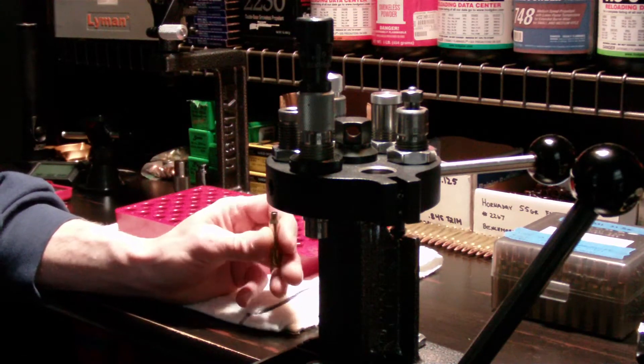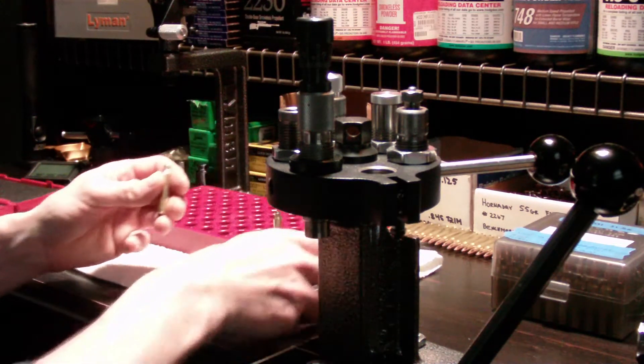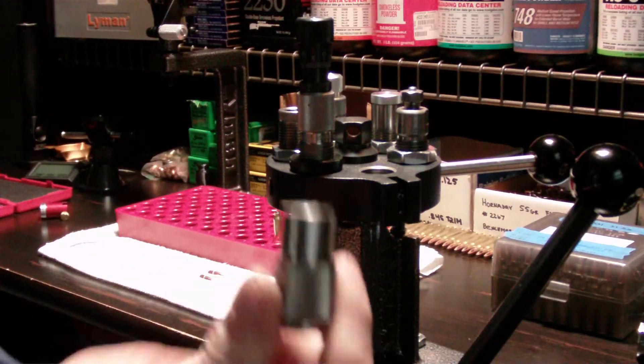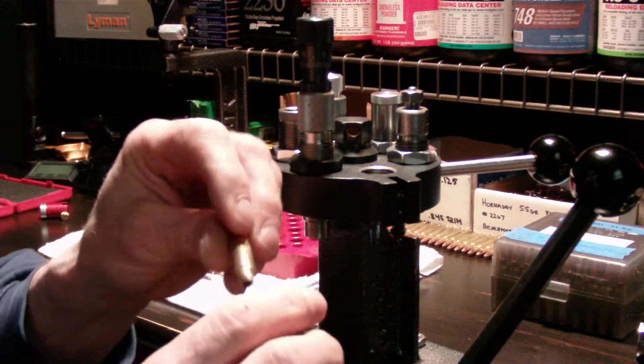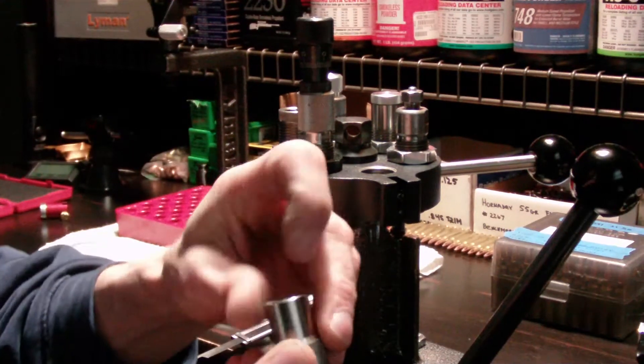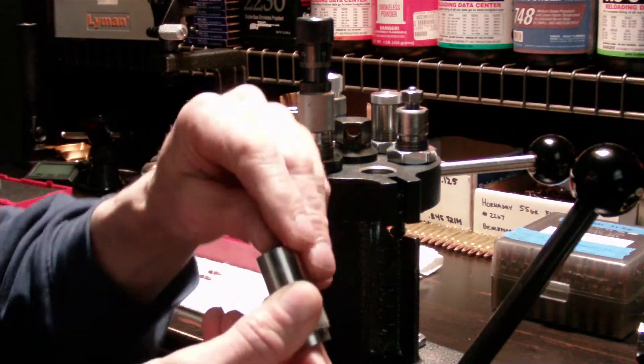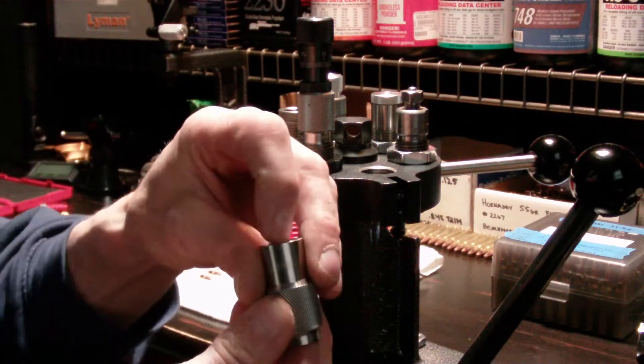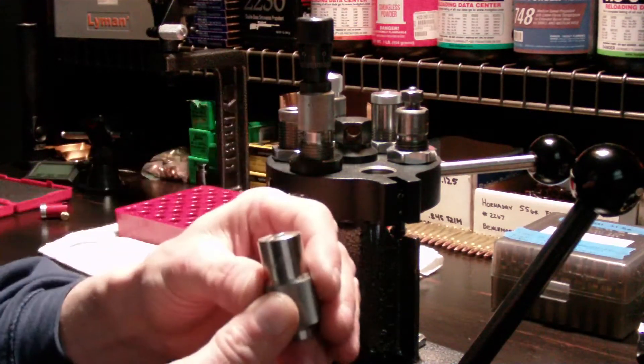In my last video I was using the Dillon case gauge to demonstrate that this will determine whether the cartridge needs trimming or not. Essentially, if it's below the high step and above the low step, it's acceptable.